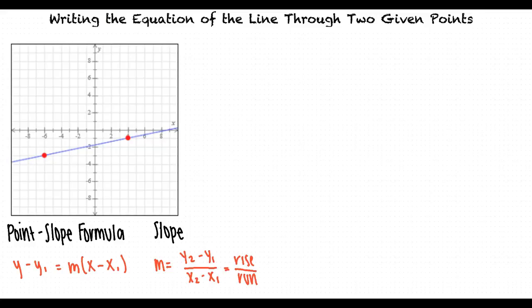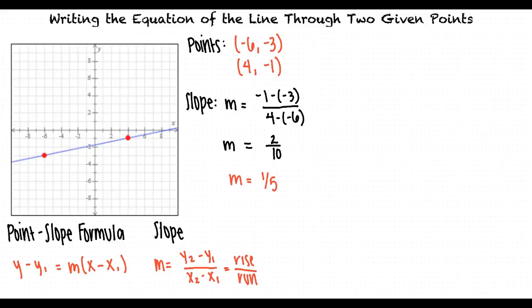The graph shows us that our line passes through the points negative 6 comma negative 3 and 4 comma negative 1, so we can substitute these coordinates into our slope formula. When we simplify this fraction, we get that our slope is 1 fifth.